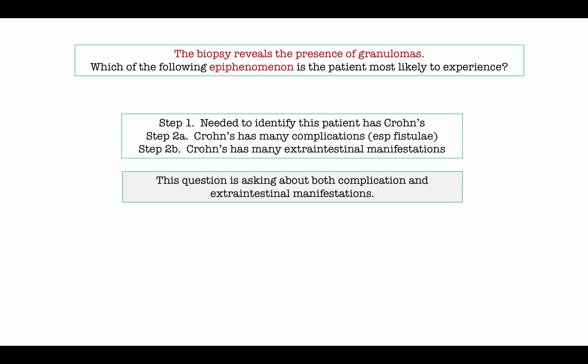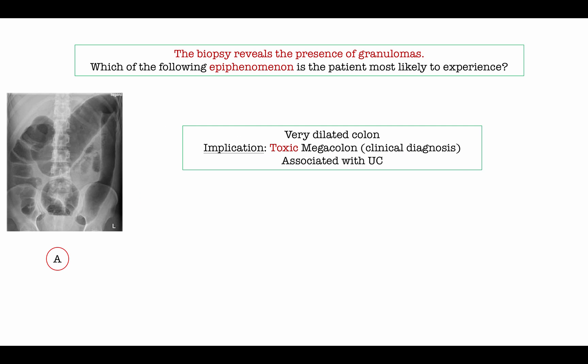The question focuses on complications and extra-intestinal manifestations. The first image is a big dilated colon meant to represent toxic megacolon — a complication associated with ulcerative colitis. You can't make the diagnosis on image alone; the buzzword is toxic. They would describe a toxic patient with history of diarrhea and then show this image. We can see toxic megacolon in other conditions such as C. diff, but they would need to provide distinguishing features such as recent antibiotic use.